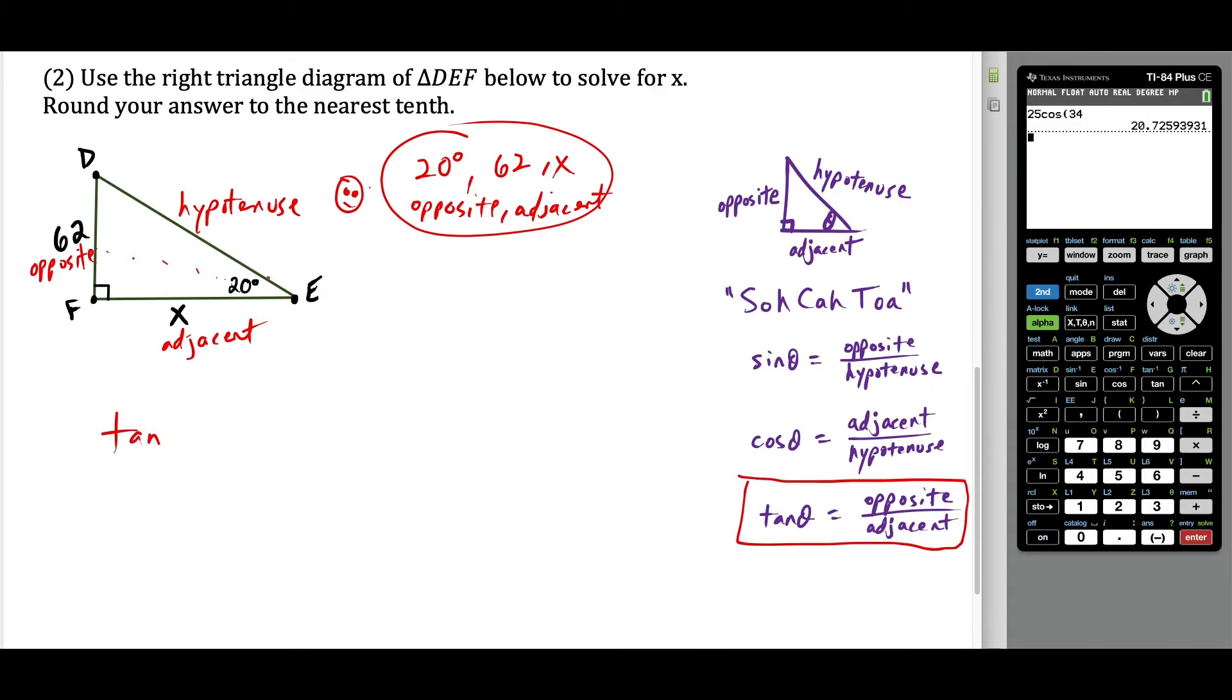So I would have tangent and the angle involved is 20 degrees. And this is equal to the ratio of the side opposite of the 20 degree angle, which is 62 units long over the side adjacent, which is x. So now I just have to do the algebra, we're doing one times 62 equals, and we have x times tangent of 20 degrees.